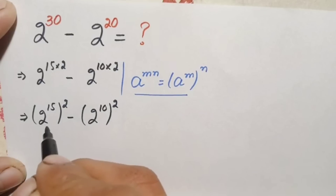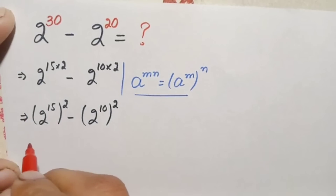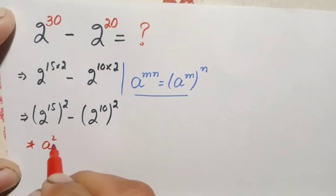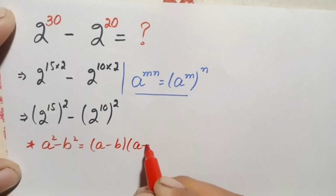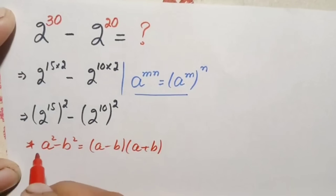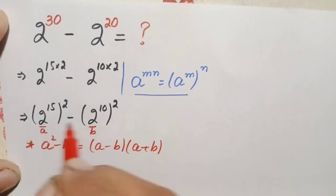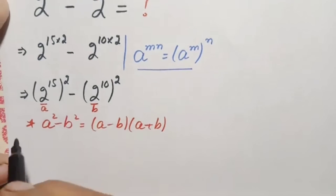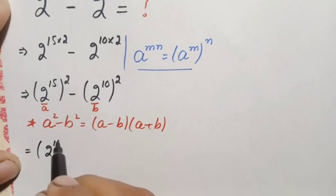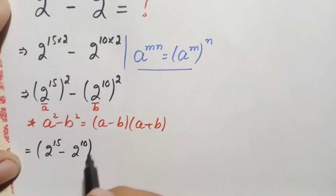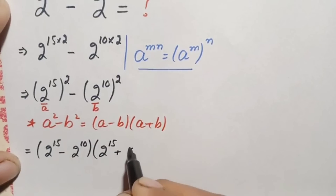Both terms are now in square form, so this expression is in the form a squared minus b squared. We will use the algebraic identity: a squared minus b squared equals a minus b times a plus b. Here a is 2 raised to power 15 and b is 2 raised to power 10. So this becomes 2 raised to power 15 minus 2 raised to power 10, times 2 raised to power 15 plus 2 raised to power 10.